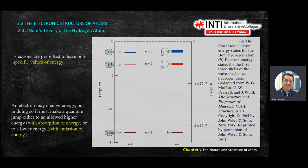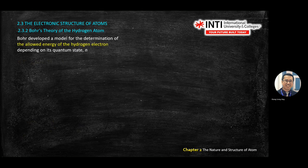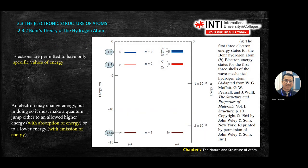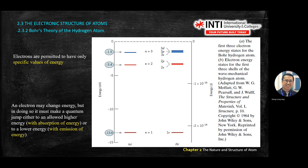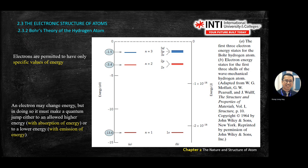To find the energy needed for an electron to jump from orbit n=1 to n=2, compare the energy values on the chart between those two levels. The difference in values is the energy required for the electron to jump from n=1 to n=2, or to return to the ground state.